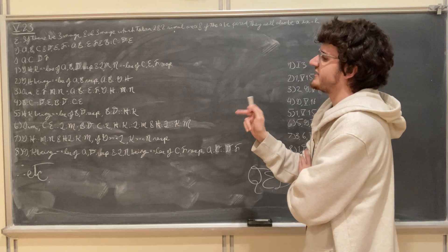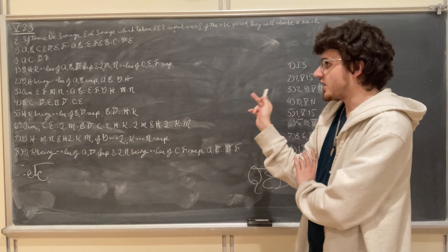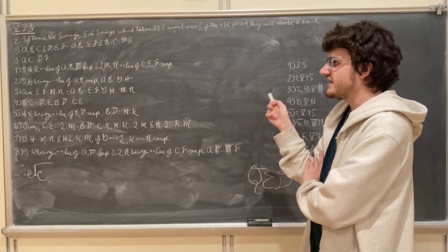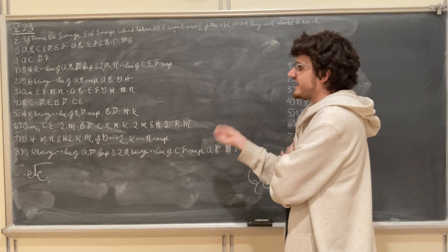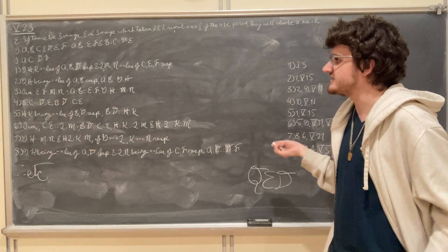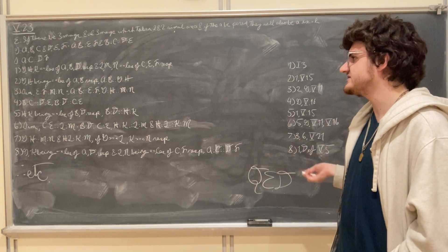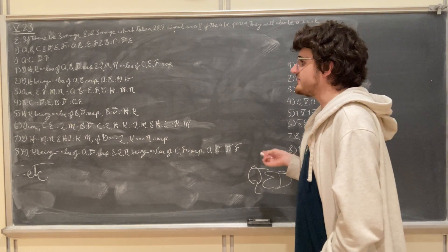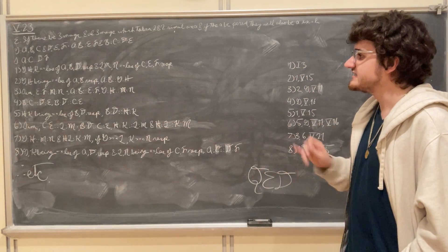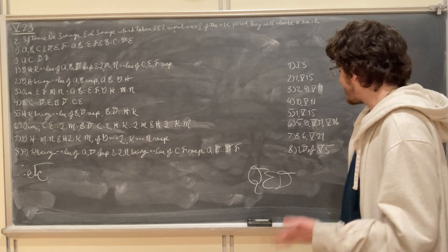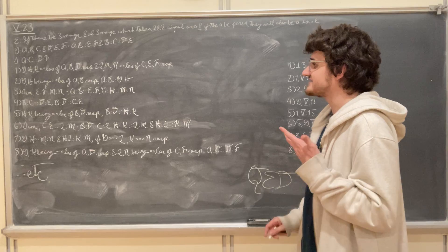Because we know that B is to C just as D is to E, then alternately by Proposition 5.16, B will be to D just as C is to E. H and K have been taken as equal multiples of B and D, so by Proposition 5.15, B is to D just as H is to K. Similarly, L and M are equal multiples of C and E, so C is to E just as L is to M. By Proposition 5.11, H is to K just as L is to M.